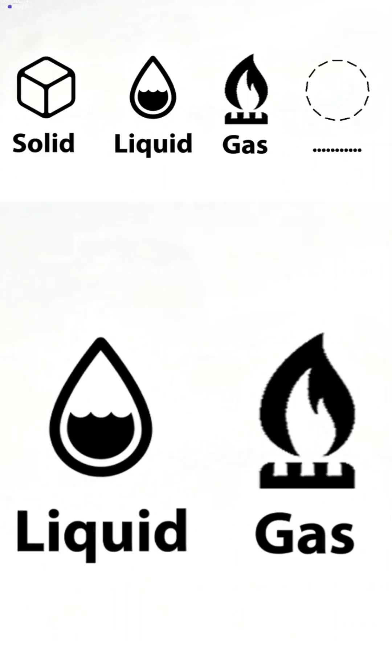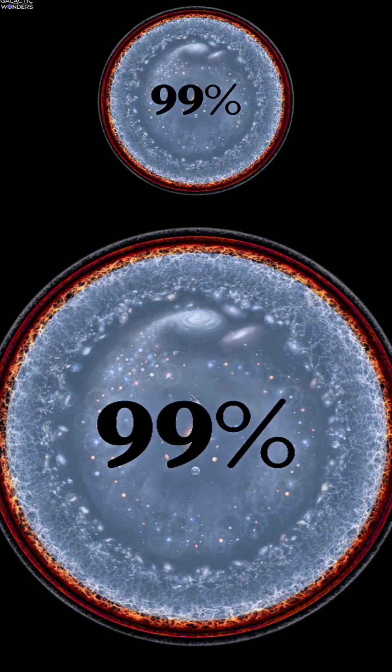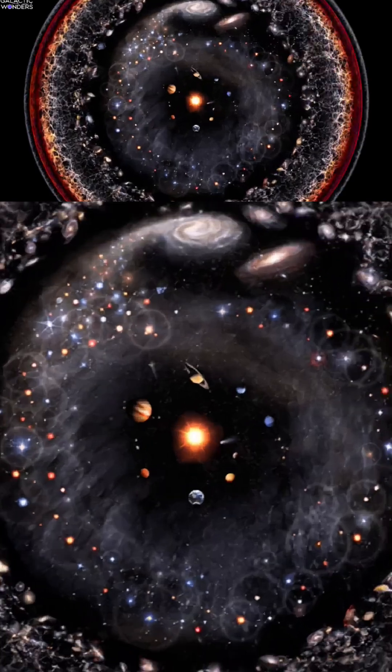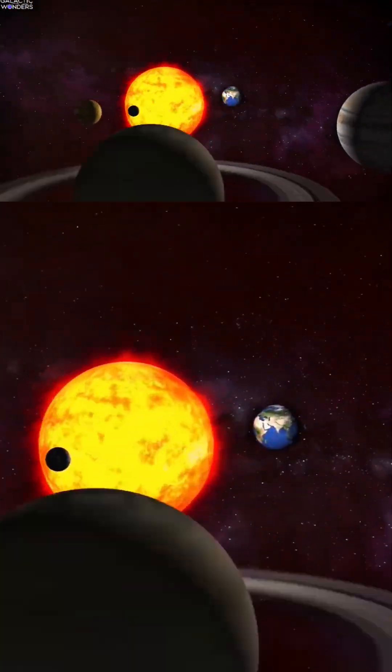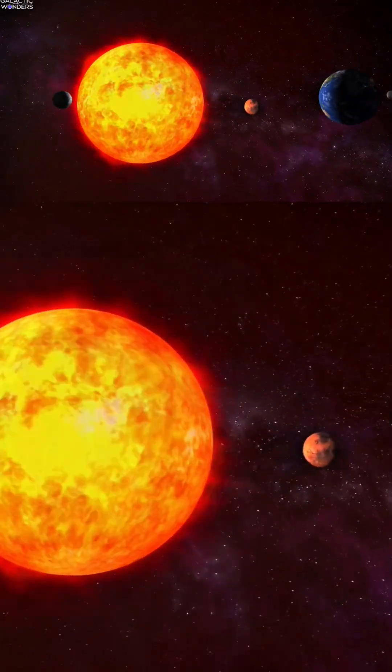Let's talk about plasma first. The forgotten fourth state of matter that actually makes up 99% of the visible universe. Every star, including our Sun, is basically a giant ball of plasma.